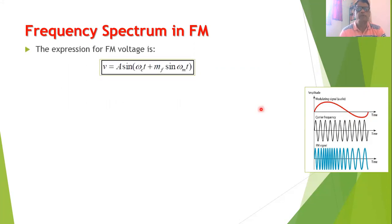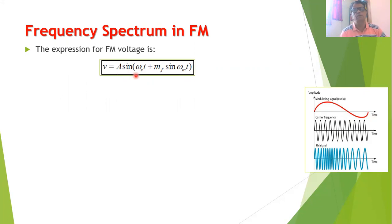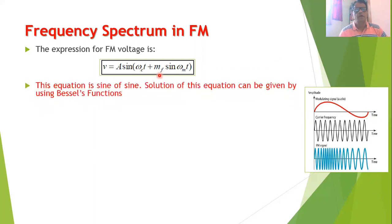The expression for the FM voltage can be written as: V = A · sin(ωC·t + MF · sin(ωM·t)). In this expression, A is the amplitude, ωC represents the carrier signal frequency, ωM represents the modulating signal frequency, and MF is the modulation index. This is a sine-of-sine equation.